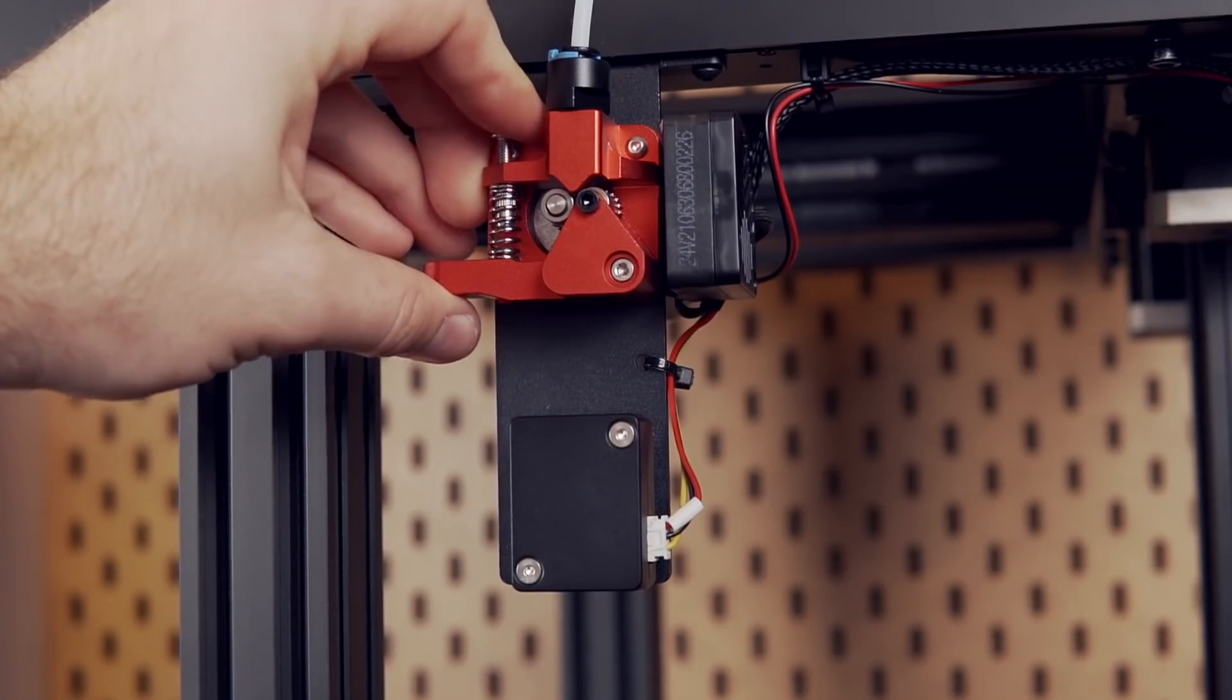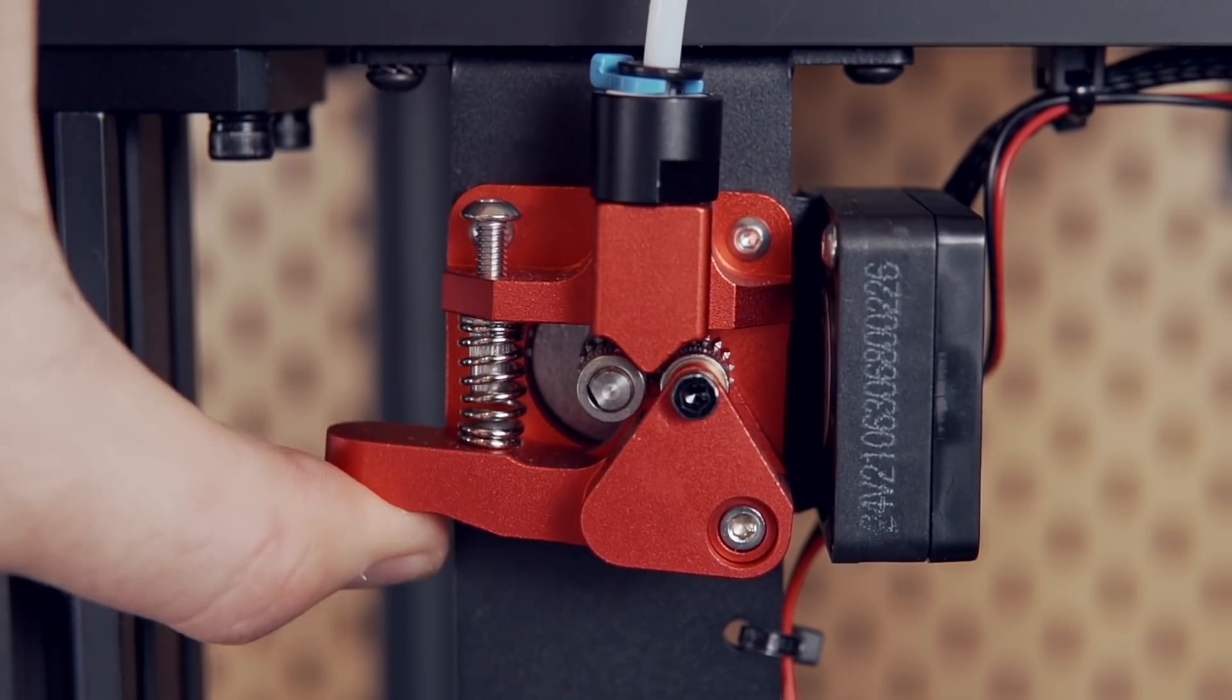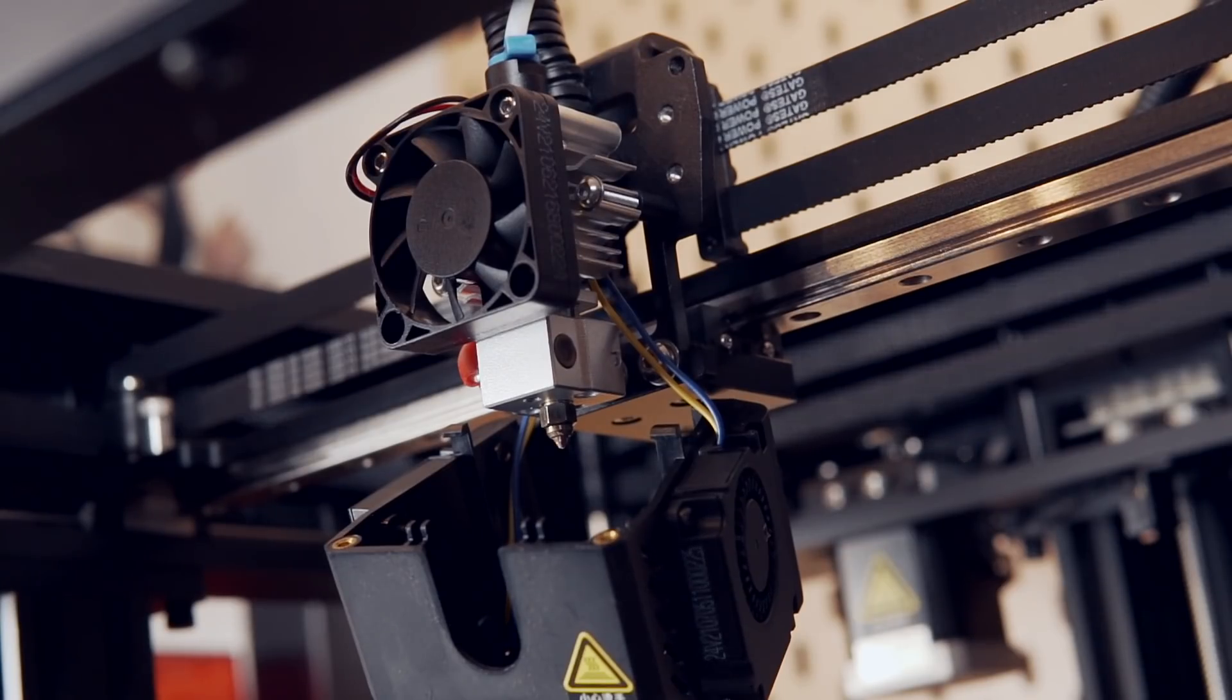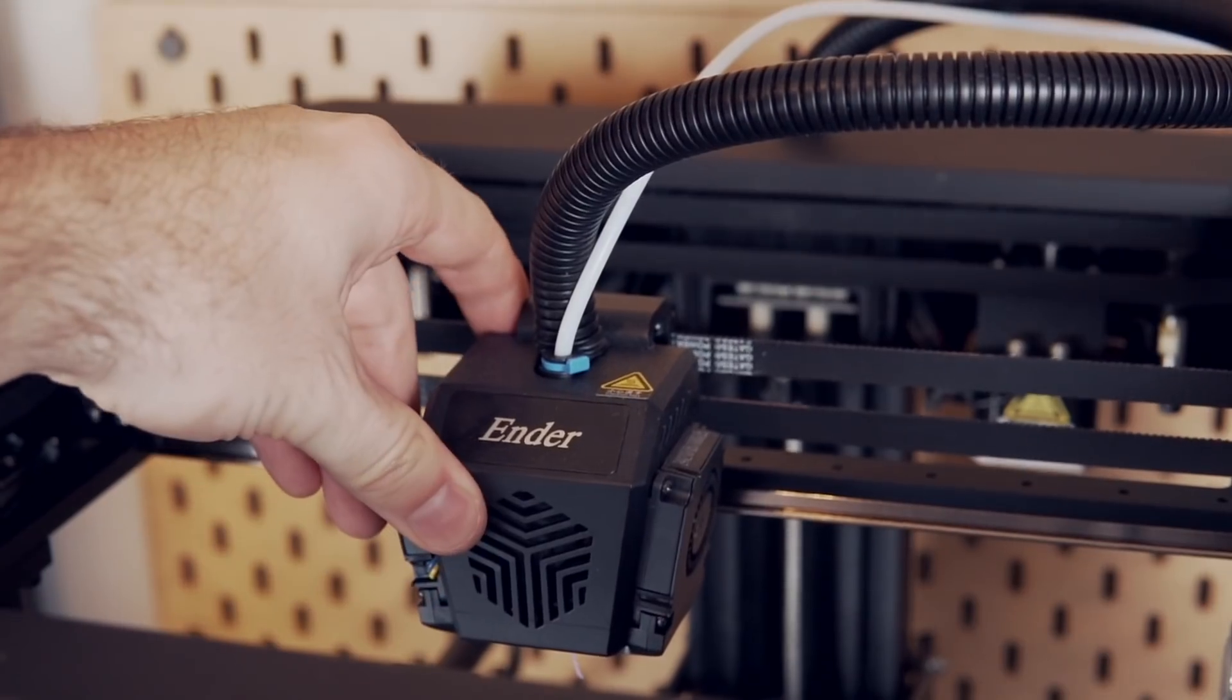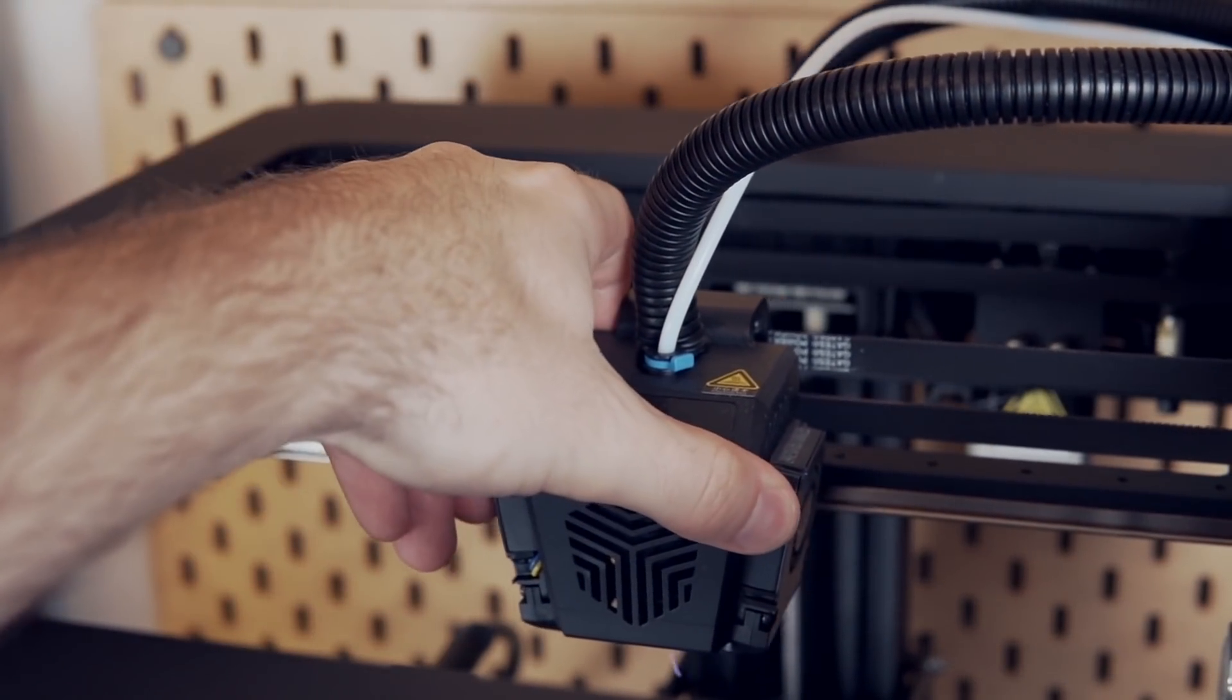The Ender 7 has a Bowden extruder. It is one of Creality's upgraded red aluminum dual-geared extruders. The hot end is not all metal and it's not quite a volcano but does have a slightly larger heat block and nozzle throat for increased material flow. The hot end housing has three fans with one for cooling the heat sink and two for layer cooling.